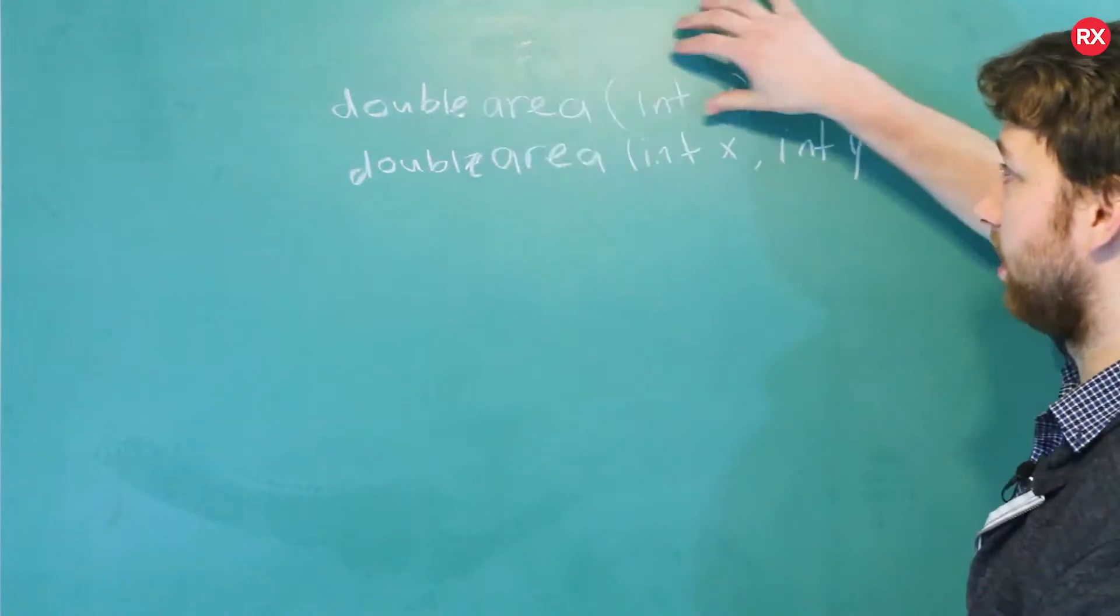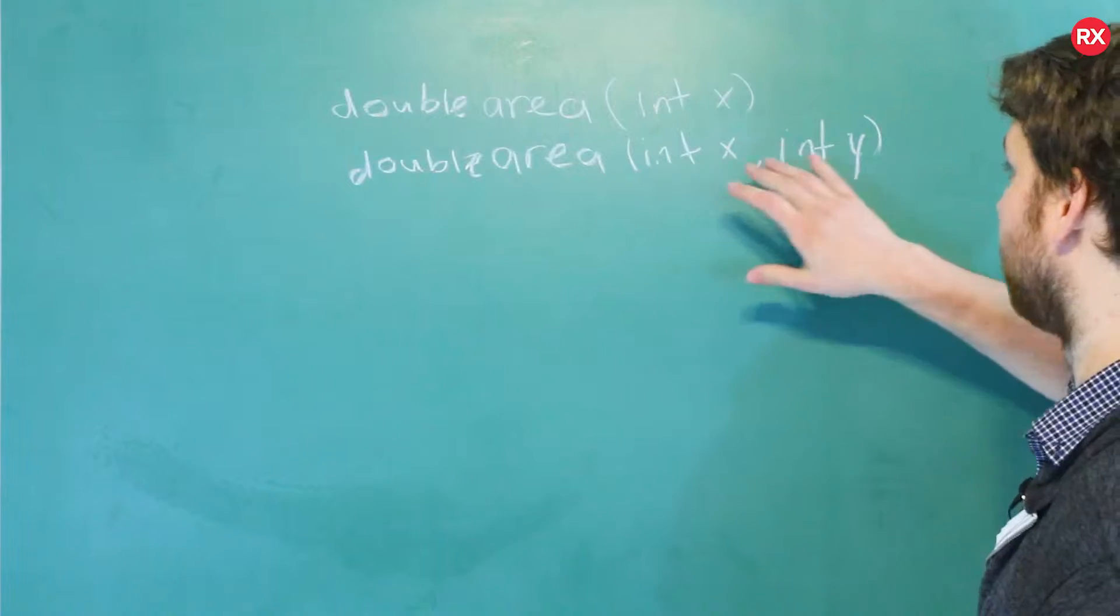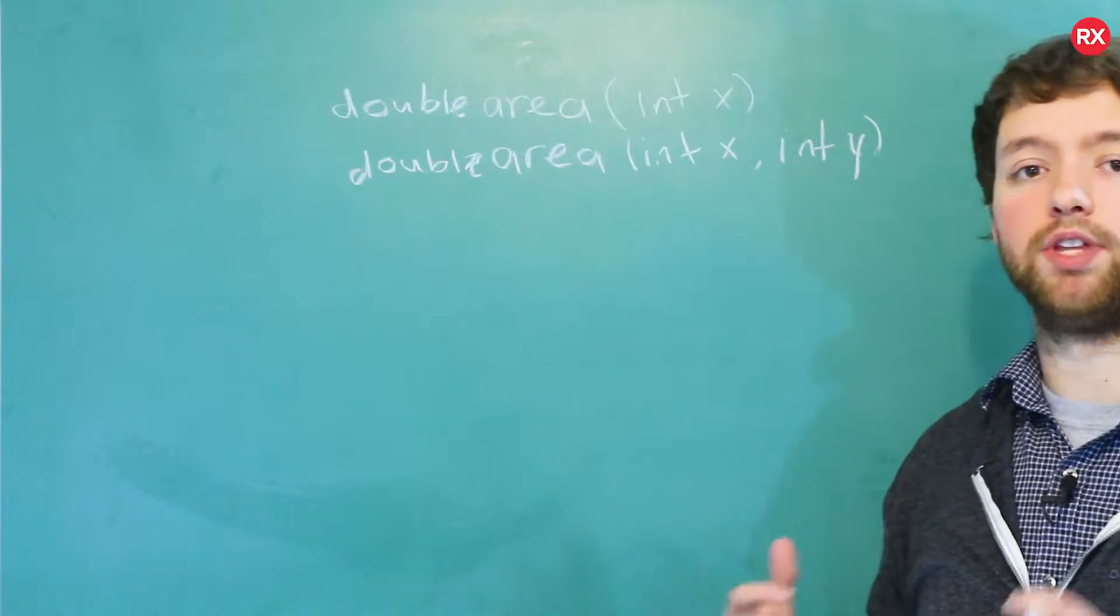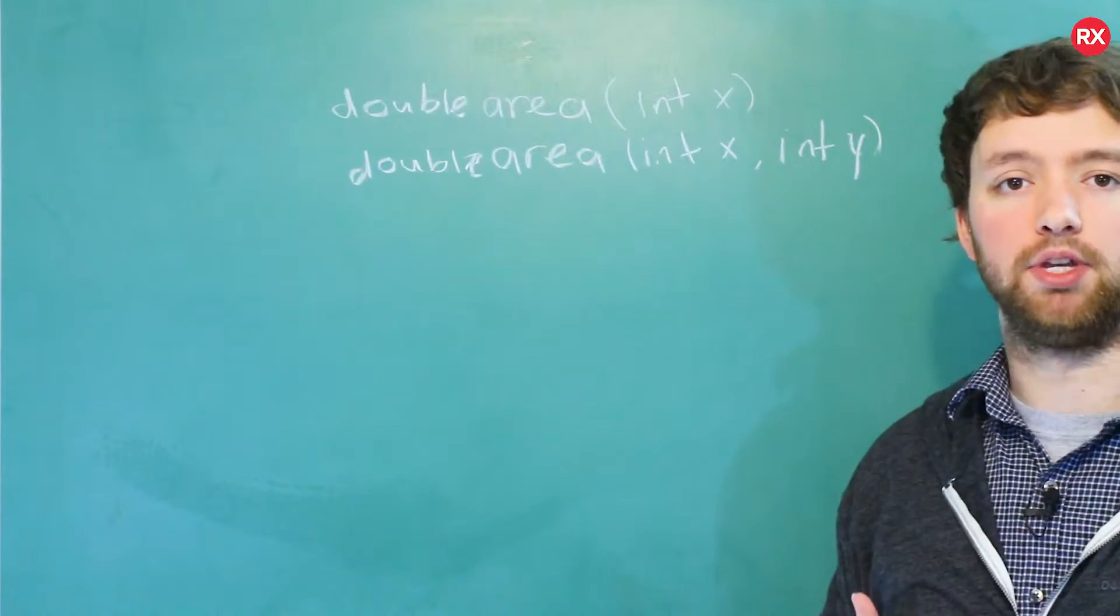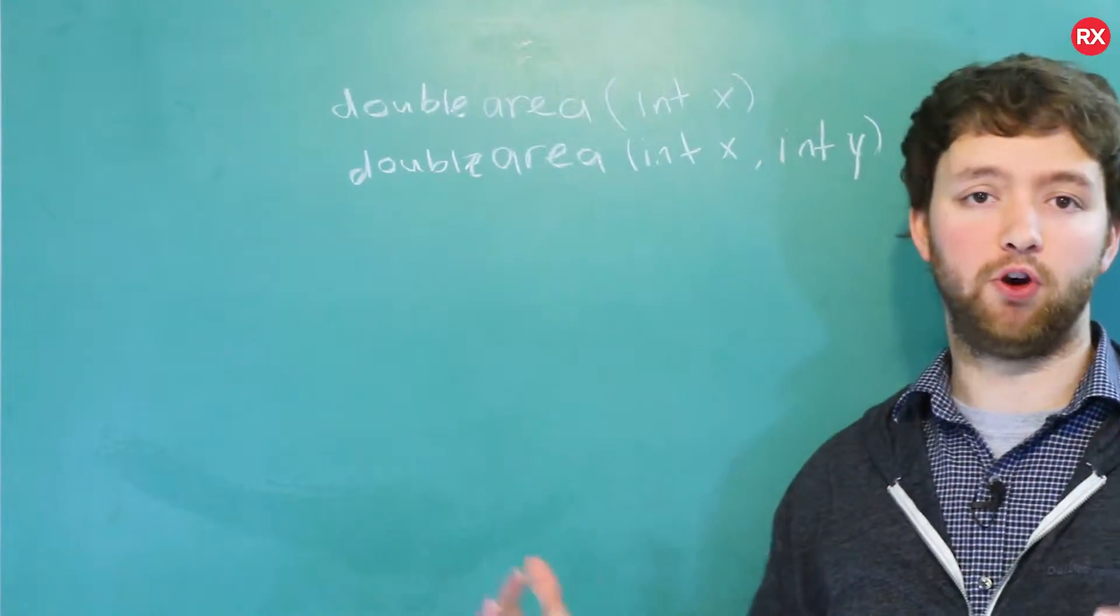So maybe you could make one that takes a double x, then you can make another version that takes double x and double y. And then maybe you could take one that takes a certain custom type such as a rectangle type or whatever it might be. I think you guys understand the concept of overloading.